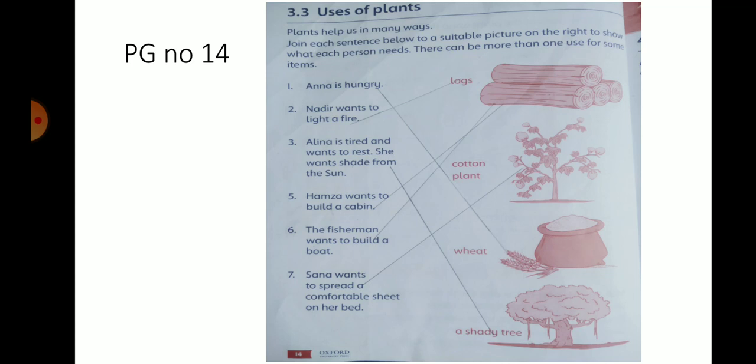So we can match the ants with weeds. Sentence No. 2 is Nadir wants to light a fire. Nadir wants to light a fire. So what do we want? Logs, cotton plants, wheat, or shady trees. We want to use logs. We will match the ants with logs.